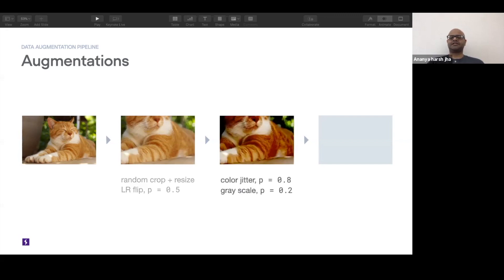you apply a color jitter with a probability of 0.8, where you vary a few different parameters like brightness, hue, contrast, and a few other things. We'll go into this again in more detail in the code that we have following this presentation.